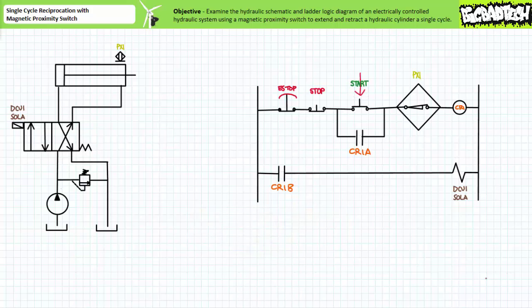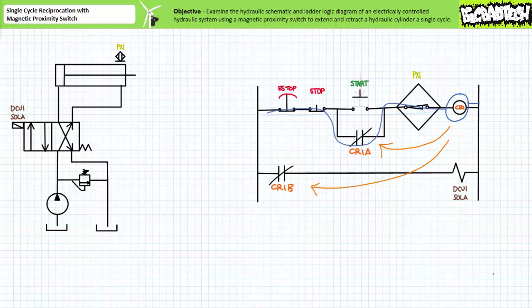Let's start by virtually pressing the start button on our ladder logic diagram. Given the e-stop, stop, and PX1 are all normally closed, we have a complete path of current — the coil of control relay CR1 energizes. All the contacts associated with CR1 change to their opposite state. CR1A and CR1B both close. With the holding contact CR1A closed, an operator can now release the momentary start push button. The start button returns to its normally open state, however we still have a complete current path through the holding contact to keep CR1 energized. That's the point of the holding contact — it maintains the last asserted state.